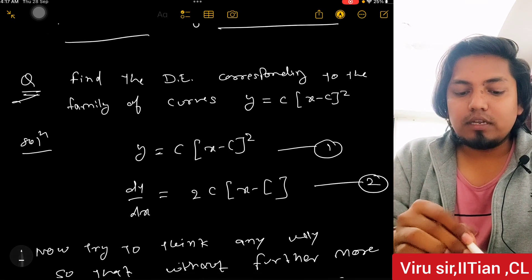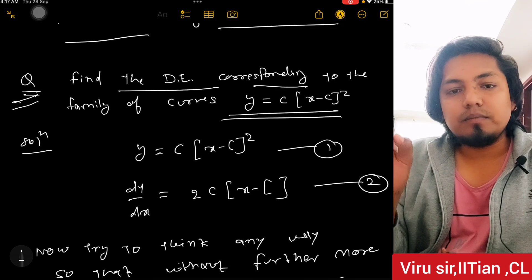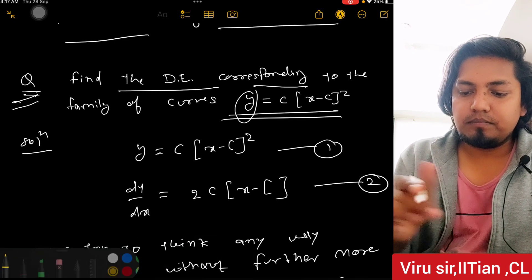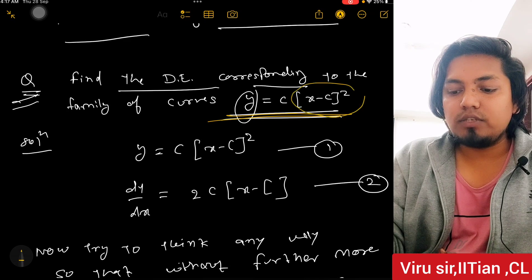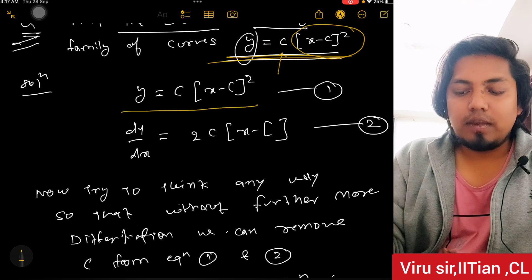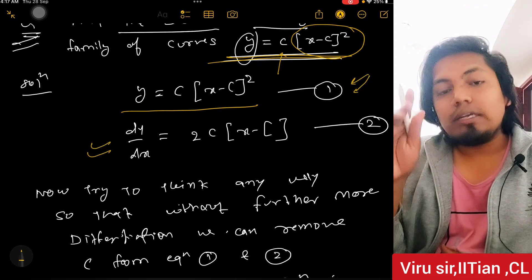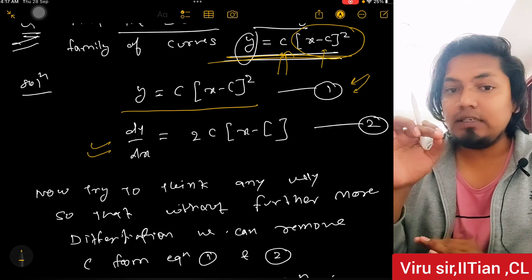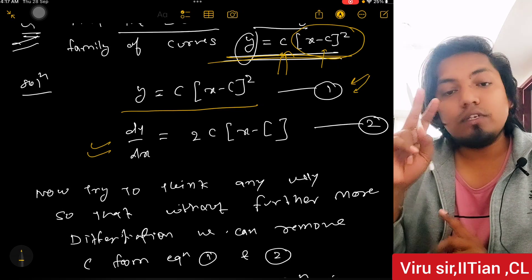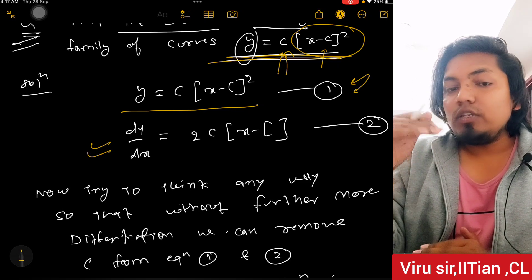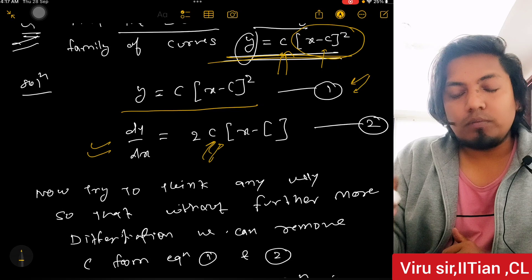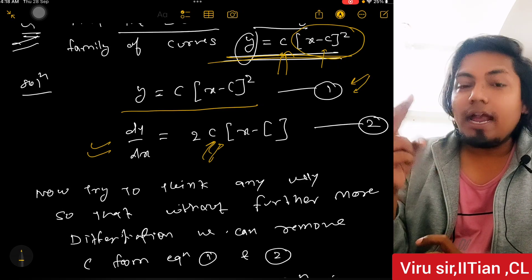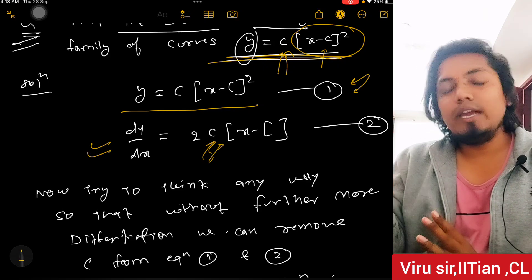Now taking another example: find the differential equation corresponding to the family of curves y = c(x - c)². Here c is written two times but it is the same constant c — only one arbitrary constant. So differentiate only once. After differentiating once, if c cannot be removed, we play with equations 1 and 2 to remove c completely and get our final answer.